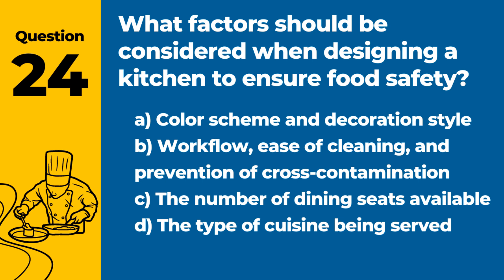Question 24. What factors should be considered when designing a kitchen to ensure food safety? Answer: B. Workflow, ease of cleaning, and prevention of cross-contamination. A well-designed kitchen can significantly reduce food safety risks.